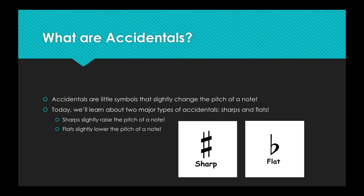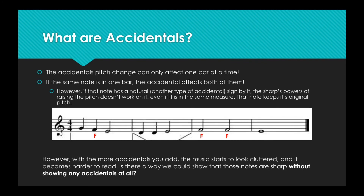There's one more accidental we'll learn about in a later slide. However, accidentals' powers are limited — they can only affect one measure at a time. So if this F was sharp, it would not affect the F's in a different measure since they aren't in the same measure. However, if the same note appears in one bar, the accidental affects both of them. There is also a mystery accidental called a natural. If a note has a natural sign by it, the sharp's power of raising the pitch doesn't work on it, even if it is in the same measure — that note keeps its original pitch.